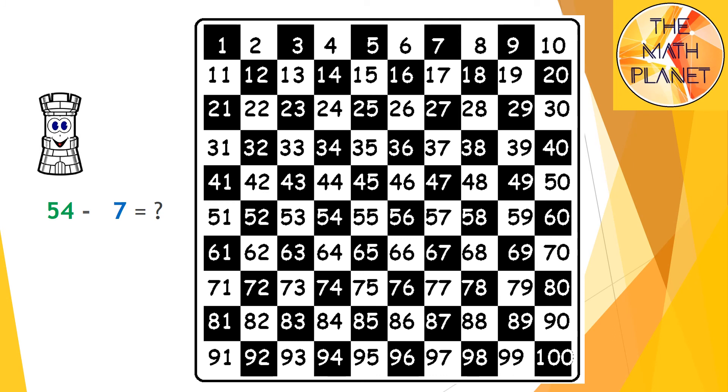Here's the chart again. Start point is 54. Then I will move only 7 steps to the left. Here are 1, 2, 3 steps. Then I need to move to the previous row as we learned before.